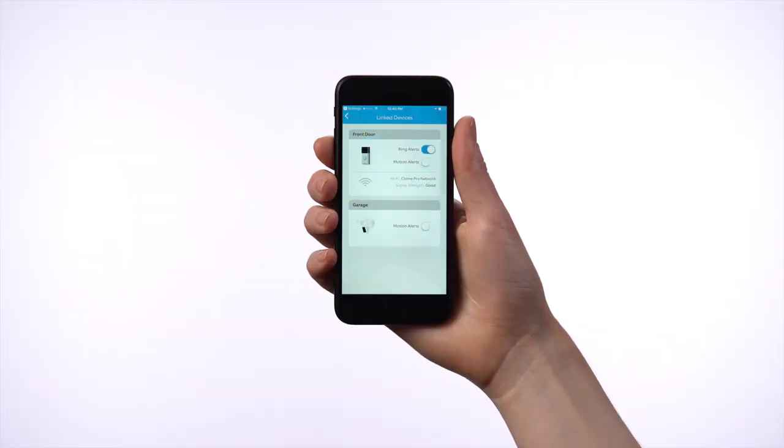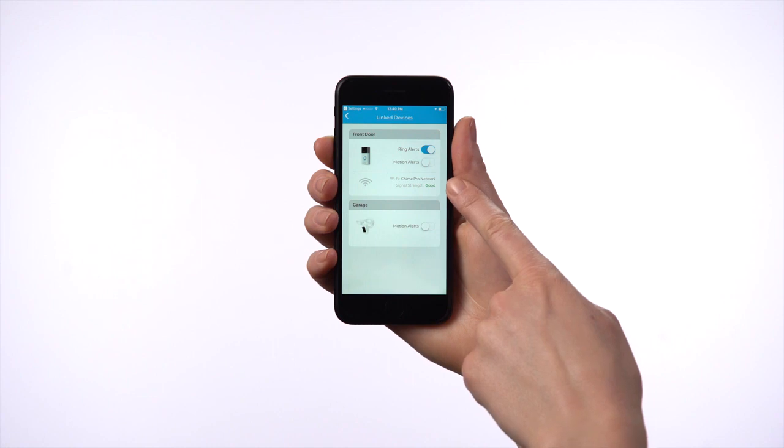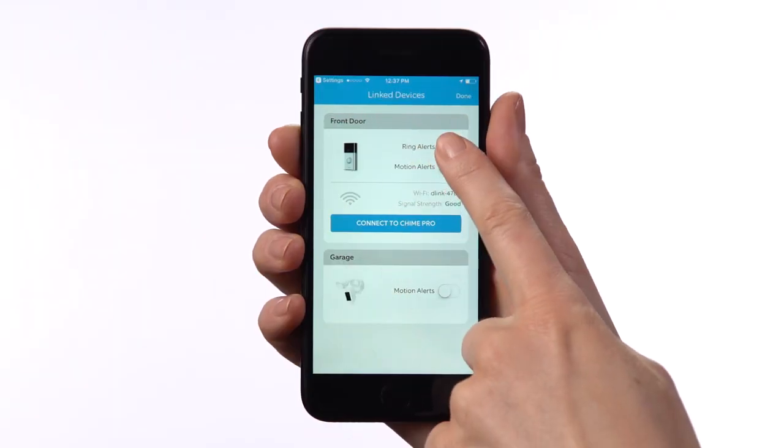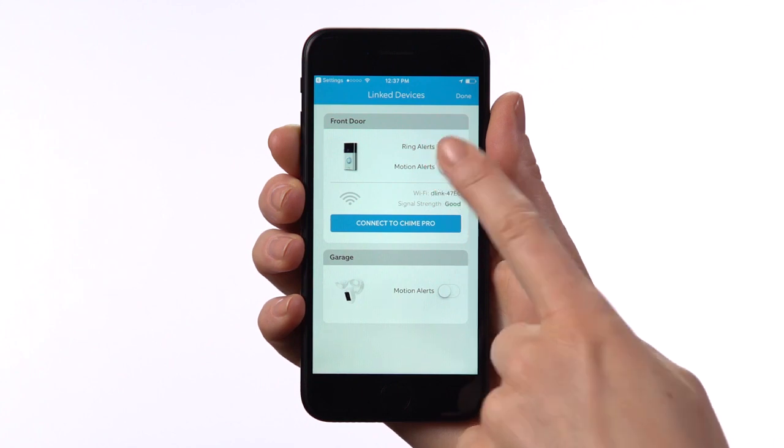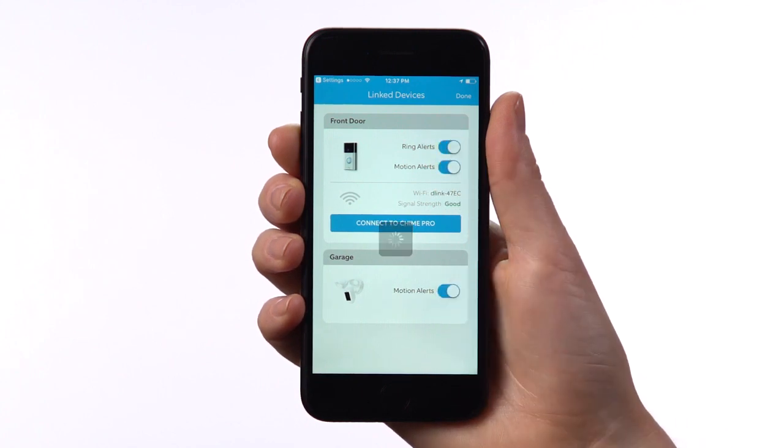Each of your Ring devices can play its alert sounds through Chime Pro, making them easier to hear. To enable this, find your Ring device in this list and tap here to toggle amplification for each type of alert.